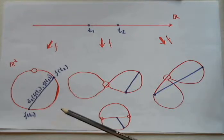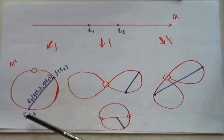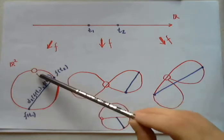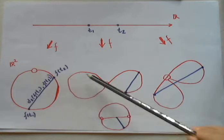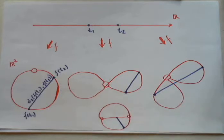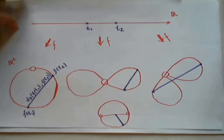You can map line into a circle with one point excluded or some H-shape curve or something else. Let's examine a few examples.